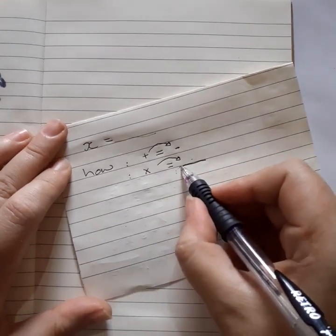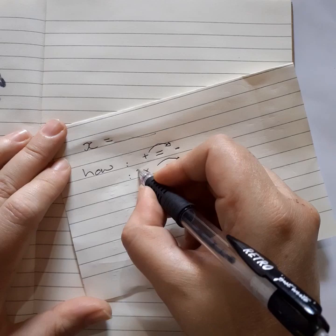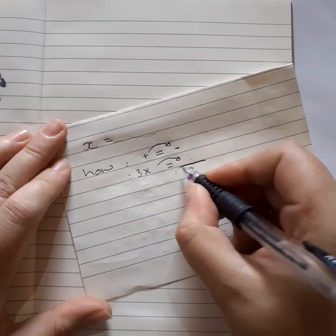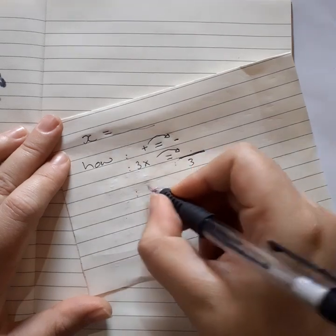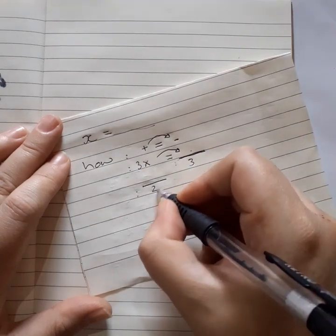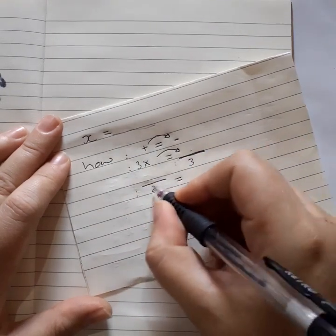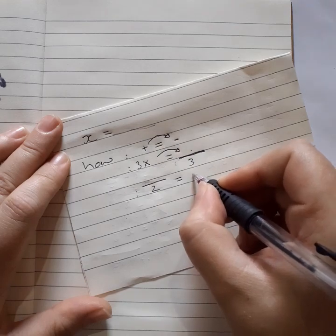Okay, if we've got times on this side and we take it over, then we're going to divide. Okay, I'm writing it like this because it's a fraction. So let's say here we've got three times, then here we've got divided by three. And if we've got divide on this side, then we're going to times on this side.